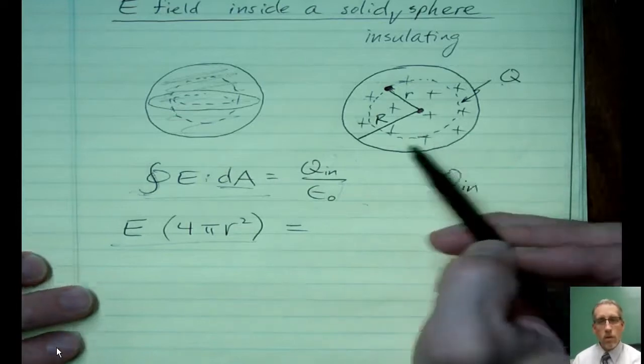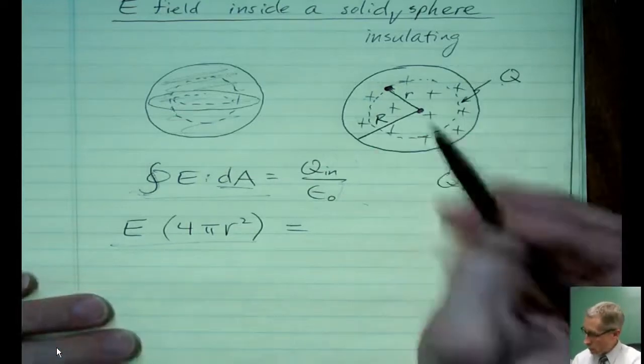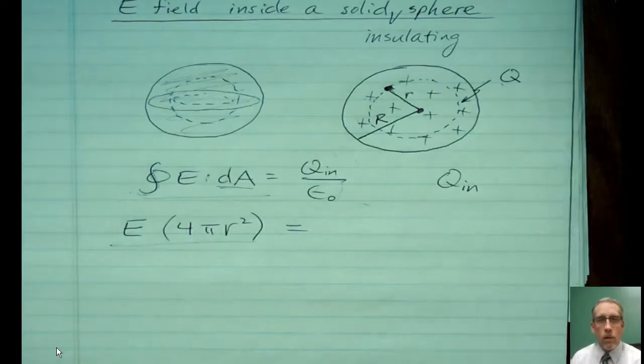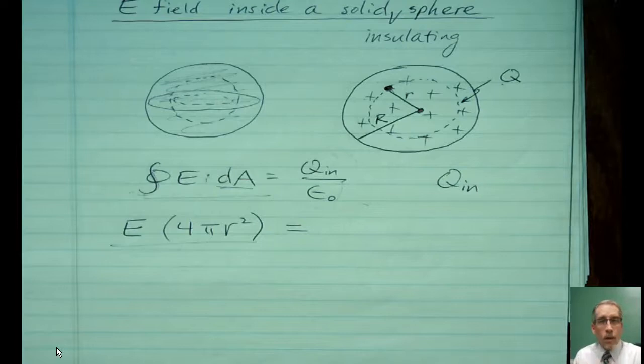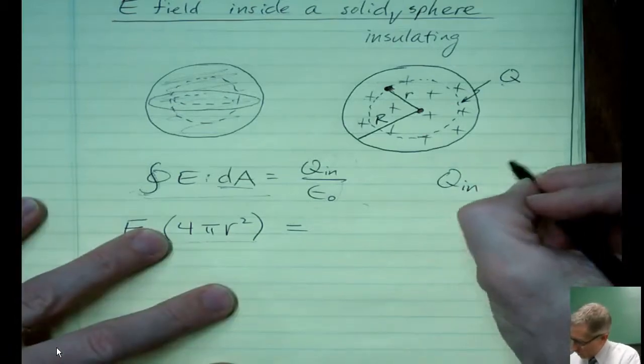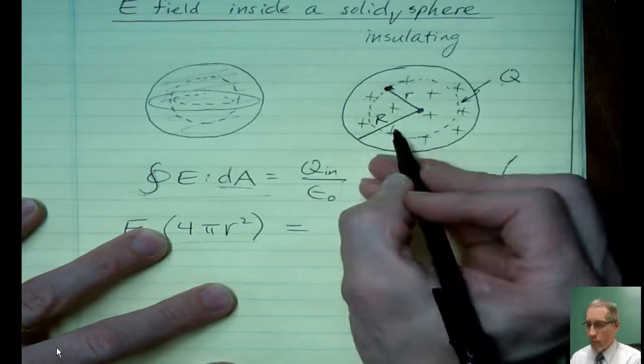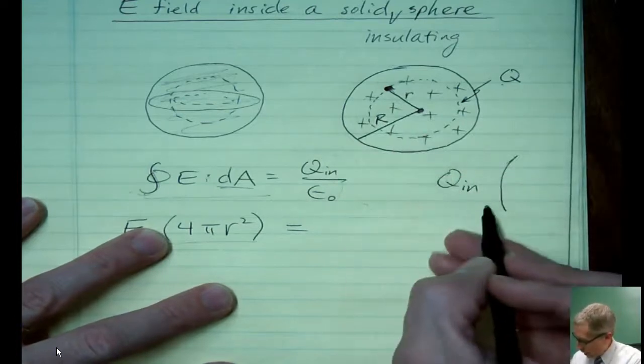And I'm going to appeal to this spherical symmetry here. So the amount of charge, because it's uniformly distributed through the volume, is just proportional to however big these spheres are, the volume of each sphere. So, I'm going to write it this way.